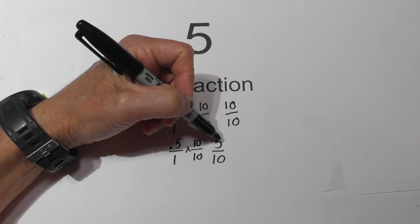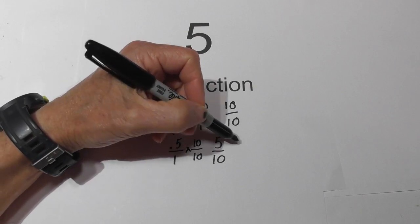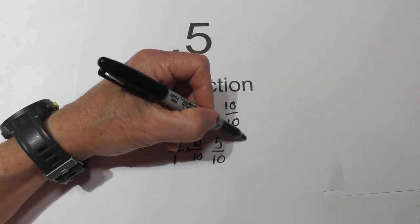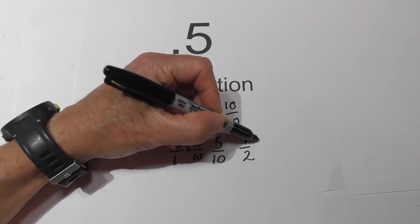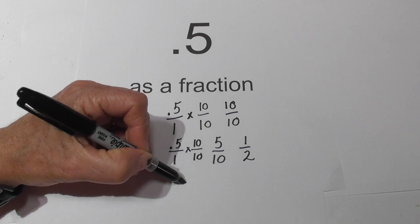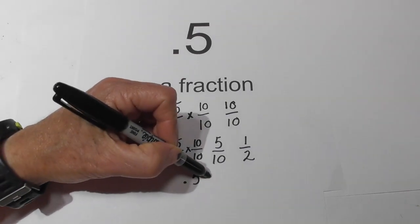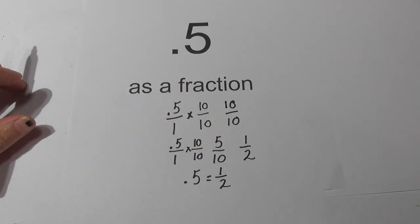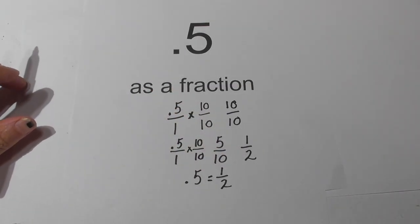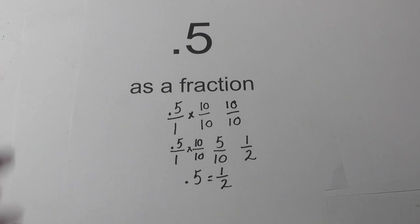We can reduce this: 5 goes into 5 one time, and 5 goes into 10 two times. So in summary, 0.5 equals 1 half. Thanks for watching. MooMooMath uploads a new math and science video every day. Please subscribe and share.